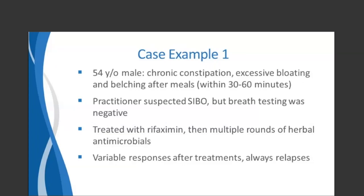In this case, a 54-year-old male had long-term chronic constipation, also presenting with excessive bloating and belching after meals, typically within 30 to 60 minutes — a fairly quick response after consuming certain foods. That is often a clue that mast cells may be part of the picture, at least when mast cell activation occurs in the upper GI tract. The practitioner suspected SIBO, but breath testing was actually negative, so SIBO was ruled out. The patient was still treated with Rifaximin and multiple rounds of herbal antimicrobials.